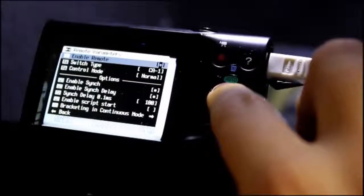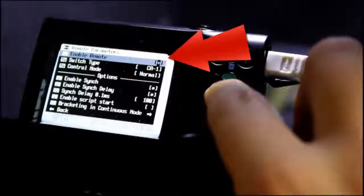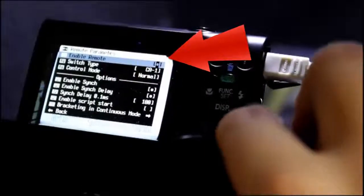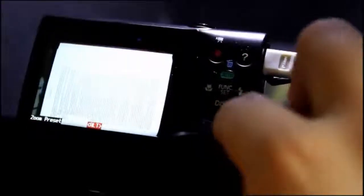When the enable remote field is highlighted, make sure there is a dot within the brackets. If not, press the select button to add the dot. This turns on remote triggering.